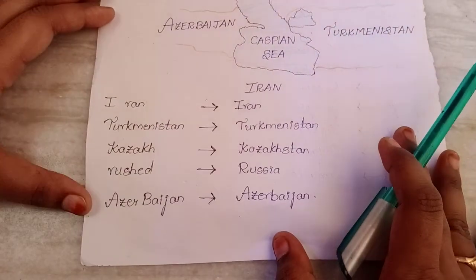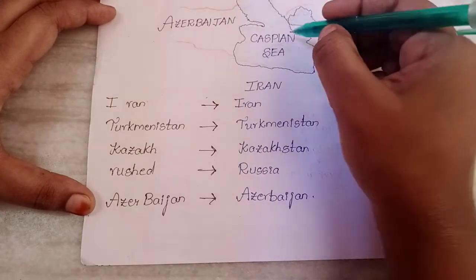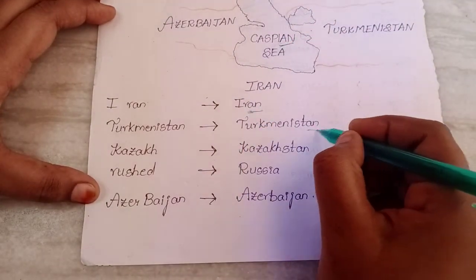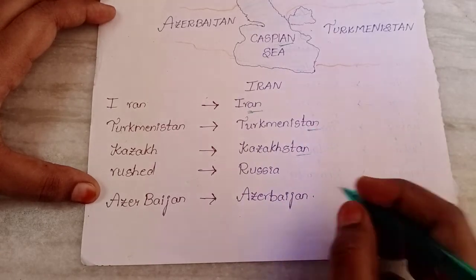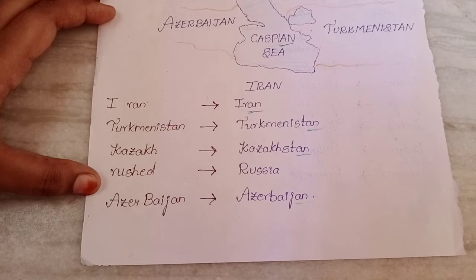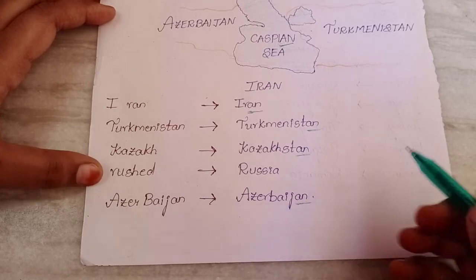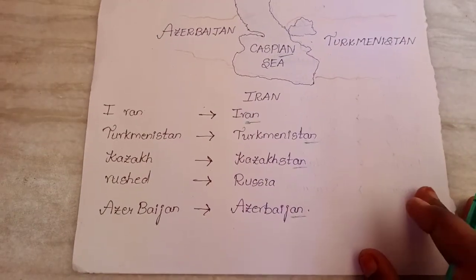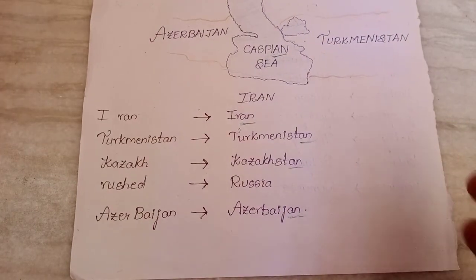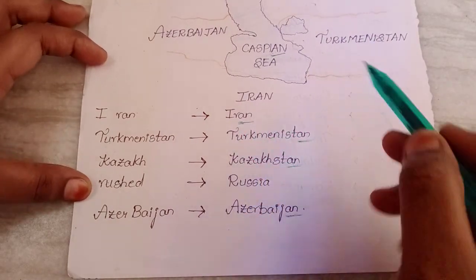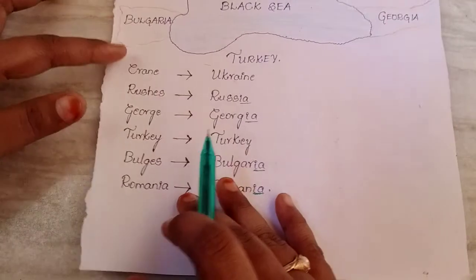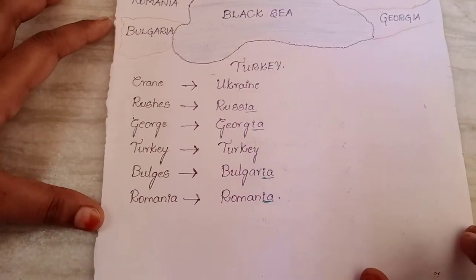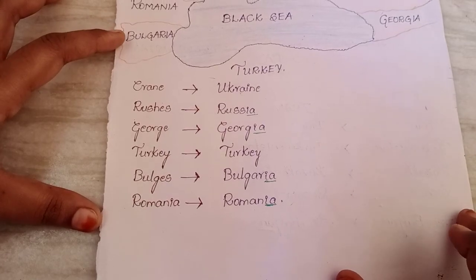When it comes to Caspian Sea countries, the names like Turkmenistan, Kazakhstan, and Azerbaijan end with 'an' or 'stan'. When it comes to Black Sea countries, the names end with 'ian' or 'ia'. So if you need to choose between options, look for names ending with 'an' for Caspian Sea and 'ian' or 'ia' for Black Sea. I hope you find this video worth watching — if yes, please don't forget to subscribe to my channel.